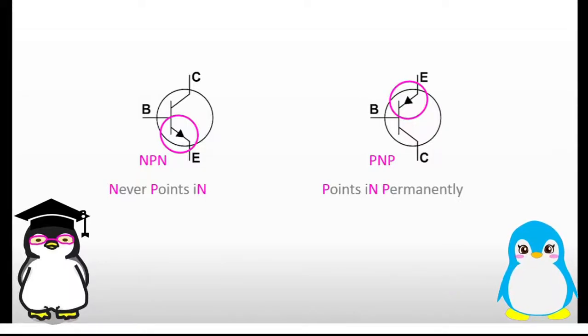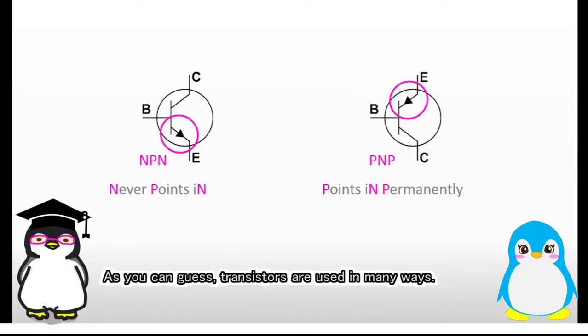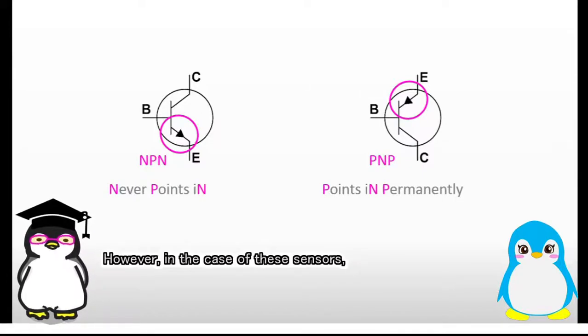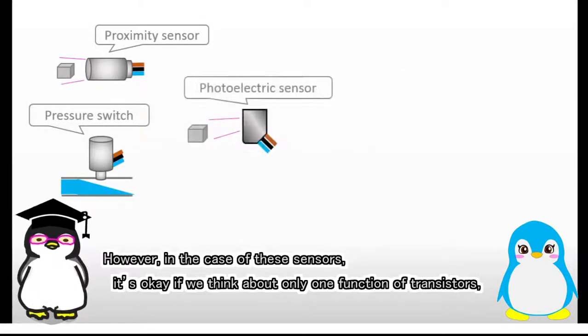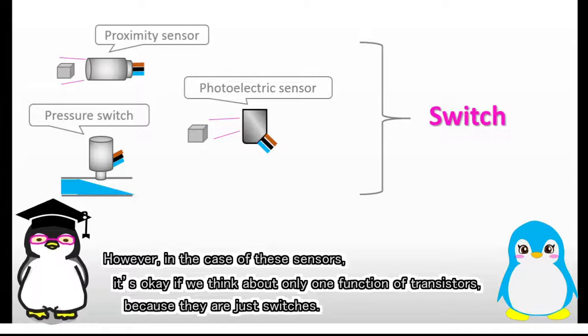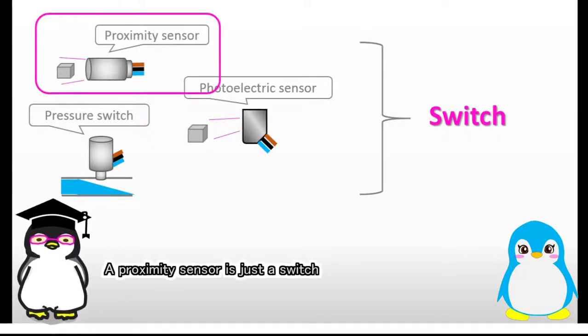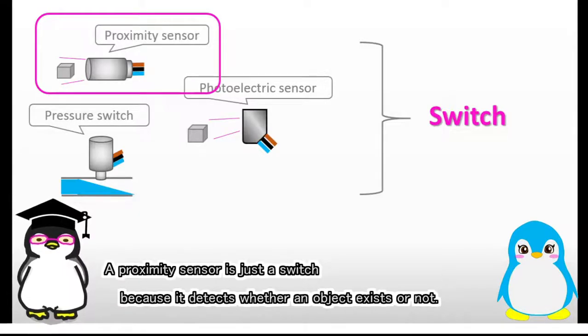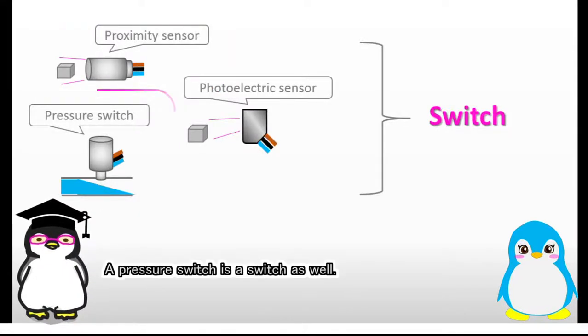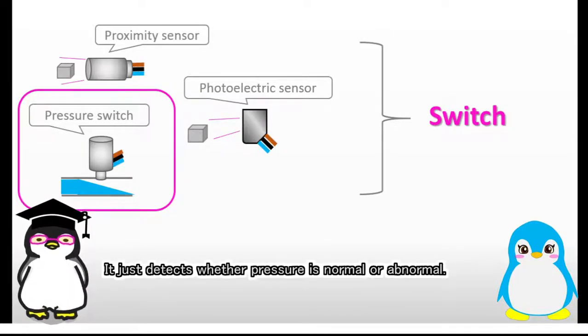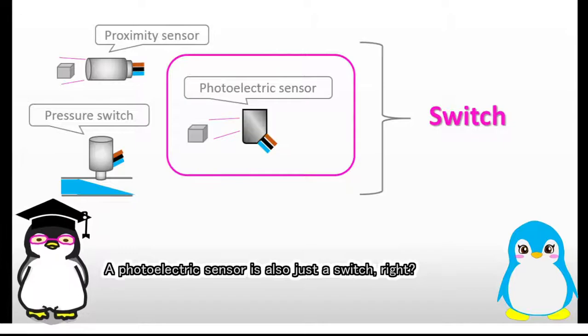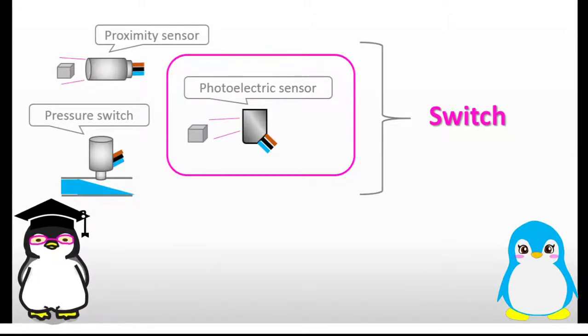But how do they work? As you can guess, transistors are used in many ways. However, in the case of these sensors, it's okay if we think about only one function of transistors, because they are just switches. A proximity sensor is just a switch because it detects whether an object exists or not. A pressure switch is a switch as well, it just detects whether pressure is normal or abnormal. A photoelectric sensor is also just a switch, right? I agree.